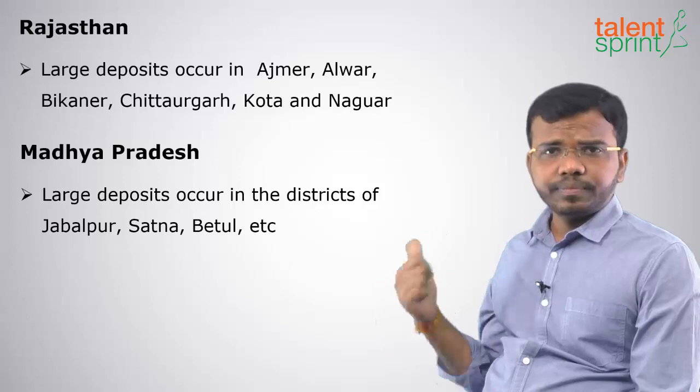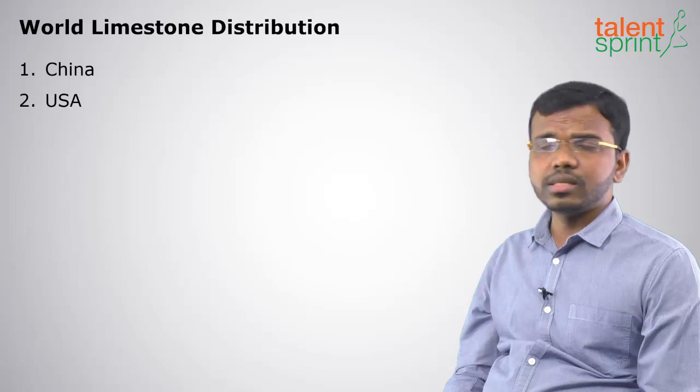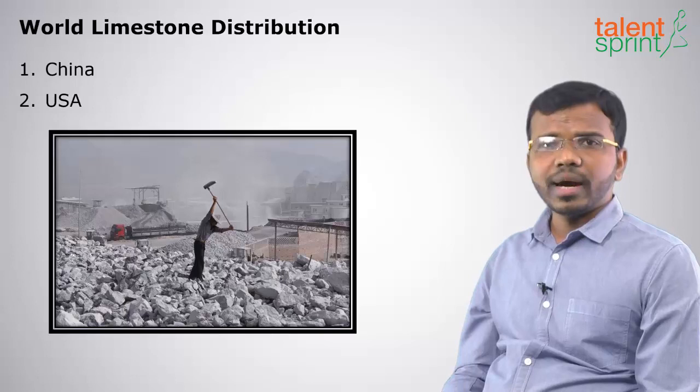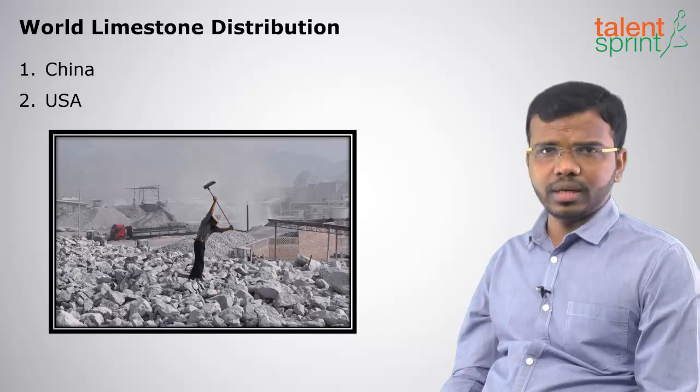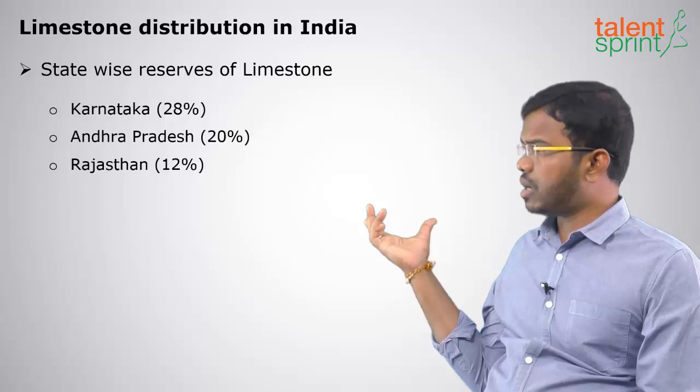In Madhya Pradesh, limestone is found in Jabalpur, Satna, and Betul districts — limestone rocks are very famous along the Narmada River in Madhya Pradesh. At the world level, China has the highest distribution of limestone. To summarize: limestone is calcium carbonate, karst topography is very important, and in India, Karnataka has the highest reserves, followed by Andhra Pradesh and Rajasthan.